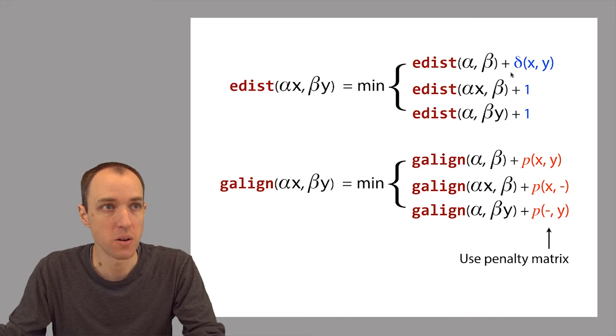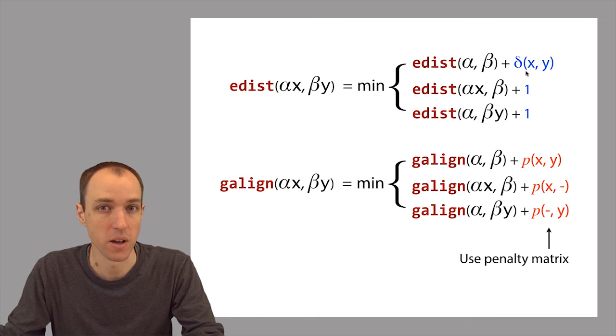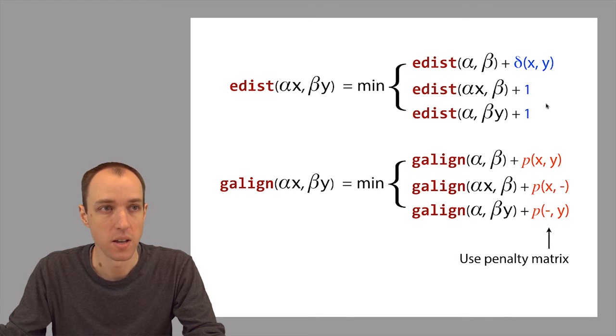Also, before, when we were considering a diagonal move, we would use our delta function to figure out whether the characters from x and y were equal, in which case the delta function evaluates to zero, or whether they were not equal, in which case the delta function evaluates to one. Now we'll just do a lookup in our penalty matrix to determine what the penalty should be.